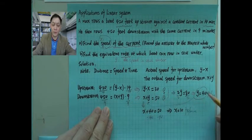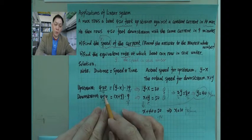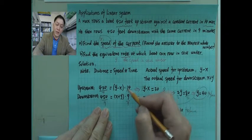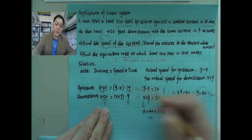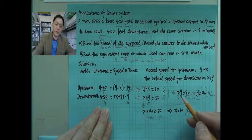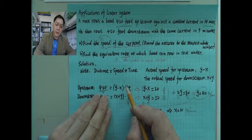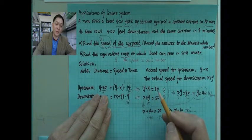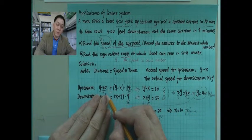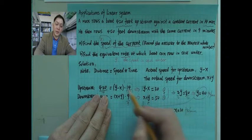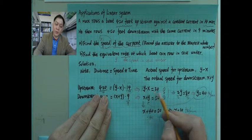Now we have two equations. For the first equation, if both sides are divided by 14, we get y minus x equals 420 divided by 14, which is 30. So our first simplified equation is: y minus x equals 30.